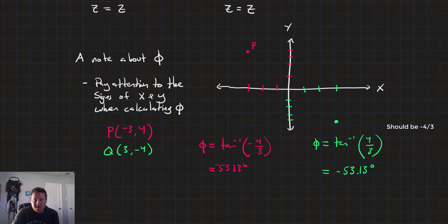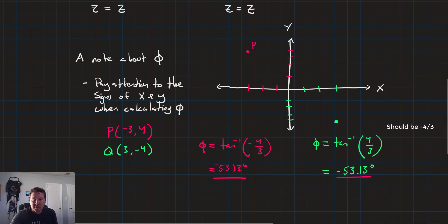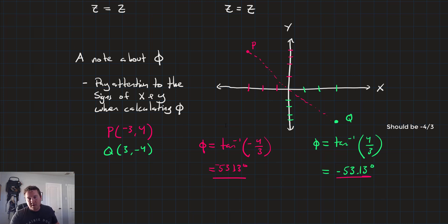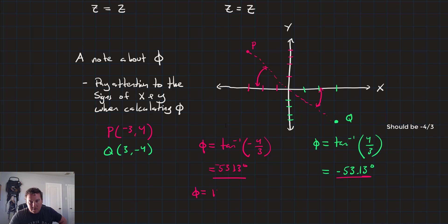Both cases give the same result: -53.13 degrees. But observing the graph, it's obvious they're not at the same place. You need to pay attention to the signs and get the correct angle off of the x-axis. For P, we actually need 180° - 53.13° = 126.87°.